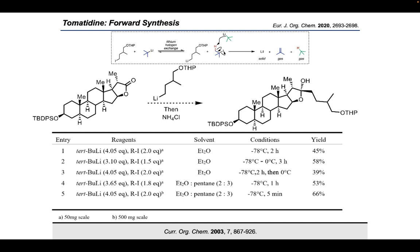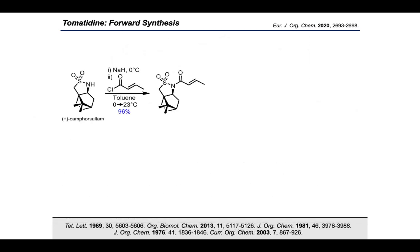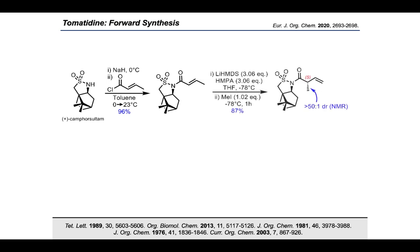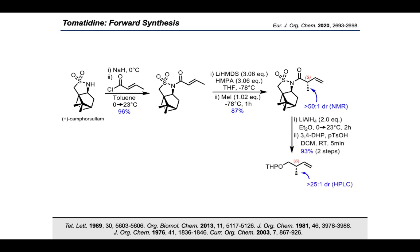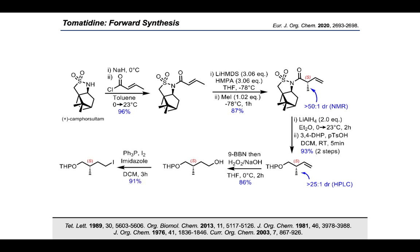The synthesis of the asymmetric alkyl iodide started from Oppolzer's chiral auxiliary, available commercially at $5 per gram. It was treated with sodium hydride and toluene followed by crotonyl chloride to give the product in 96 percent yield after recrystallization from methanol. Protonation of the gamma carbon followed by treatment with methyl iodide generated the asymmetric alpha-methylated product in 87 percent yield with 50:1 dr. The Evans chiral auxiliary offered poor diastereoselectivity with a reported dr of only 3:1. The alkylated product was treated with LiAlH4 to generate the corresponding alcohol, protected directly as its THP ether in 93 percent yield over two steps. Hydroboration and Appel reaction yielded the asymmetric alkyl iodide in 86 and 91 percent yield respectively.